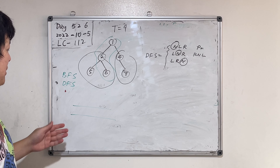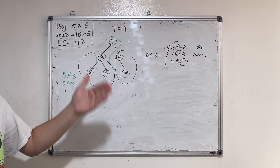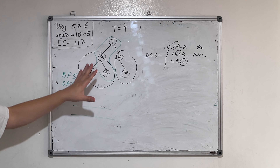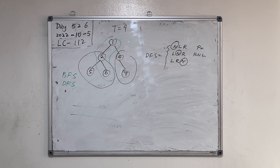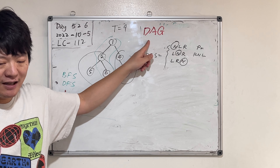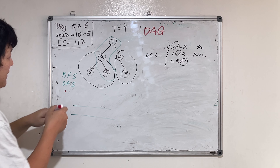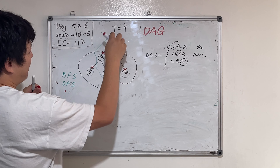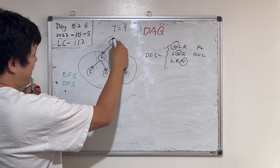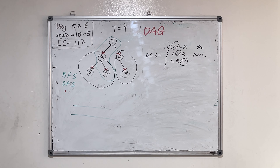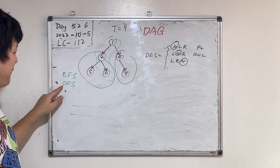Today we're going to talk about depth-first search, and in the next session breadth-first search. These are the two most important algorithms we can apply on trees and graphs. The binary tree is a graph — it's a DAG. Directed acyclic graph: directed means there's a direction from parents to kids, you can only visit kids from parents but not vice versa; acyclic means there's no cycle.